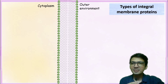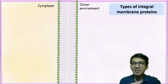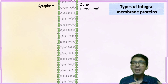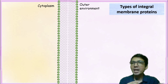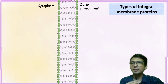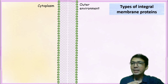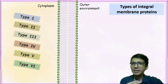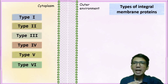Let's discuss integral membrane proteins. They can be classified into different types based on the way they are arranged in the cell membrane. These integral membrane proteins are designated as type 1, type 2, type 3, all the way up to type 6.